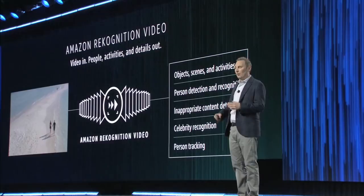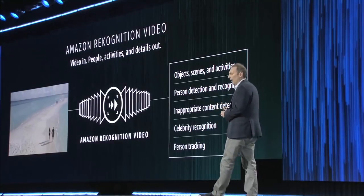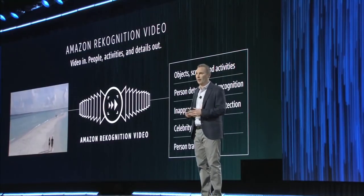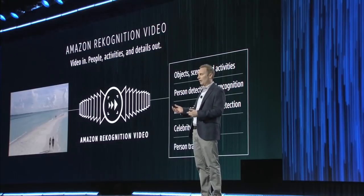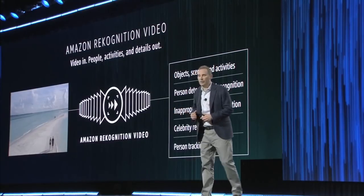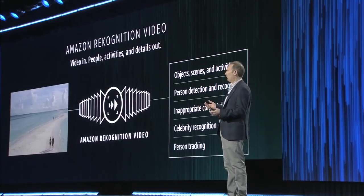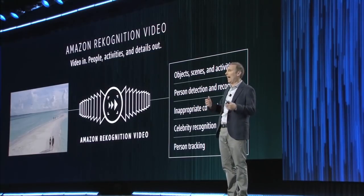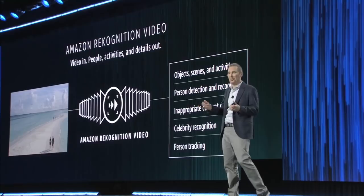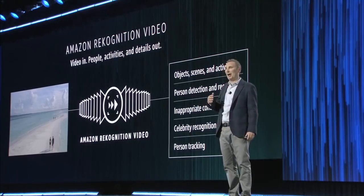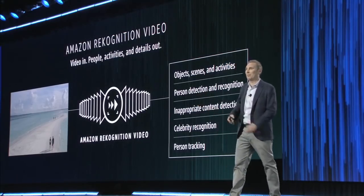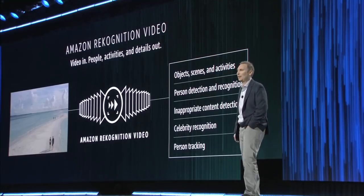With Rekognition Video, you pass videos to us using the APIs or an SDK we provide. We'll detect all sorts of things in the video — objects, faces, and scenes, like a package being delivered, which is useful for a lot of different apps. We'll also detect inappropriate content that you may not want on your website or videos you may not want your users watching.